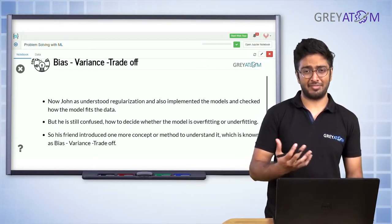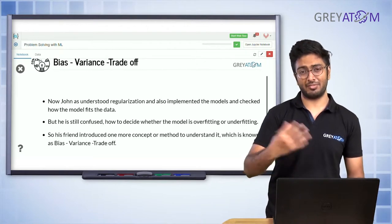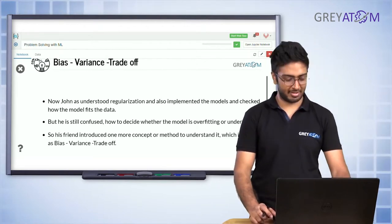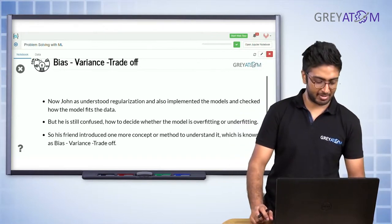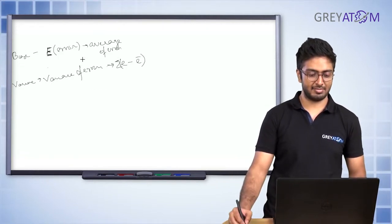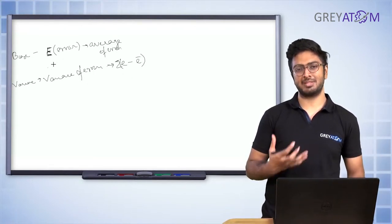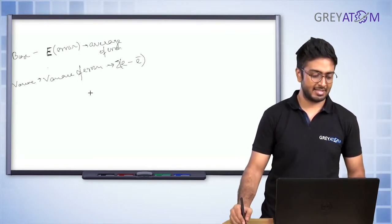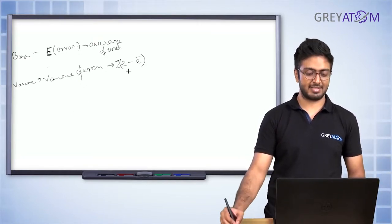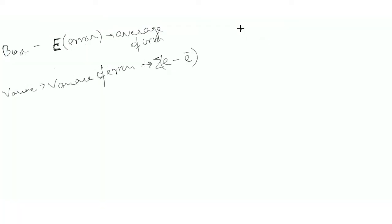What does high variance mean? It basically means we don't know if the average value is high or low, but we know there's a lot of deviation from the average value of error. So if you take the average of all the errors you get bias, and if the bias is high that means there are a lot of high errors in the dataset.